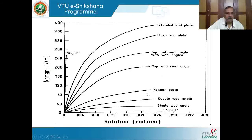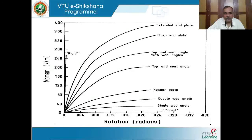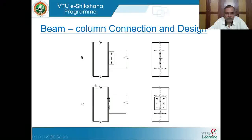A theoretically 100% rigid connection carries only moment with no rotation, but in practice all connections undergo some rotation. For example, at a moment close to 250 kN·m, a rigid connection may undergo a very small rotation of about 0.004 radians — a very small departure from the original position, indicating nearly rigid but not perfectly rigid behavior.